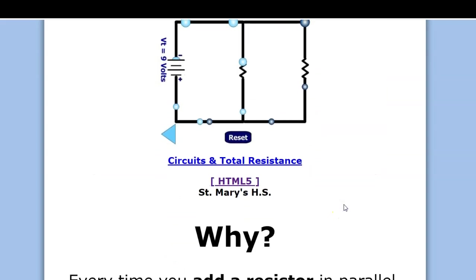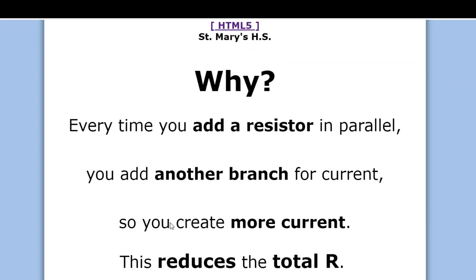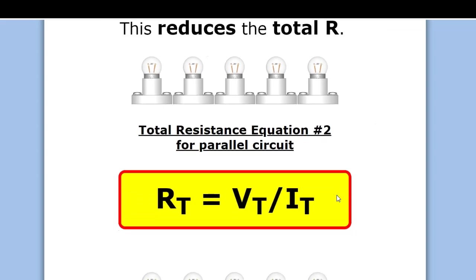Every time you add a resistor in parallel, you add another branch of current, and you're effectively getting more current — that's really effectively reducing the total resistance. That kind of resolves that paradox. When you add another resistor, sure, you've added another resistor, but you're also adding current. If you're getting more current, you've effectively lowered the resistance.